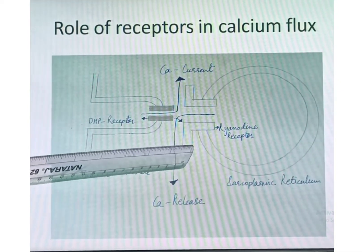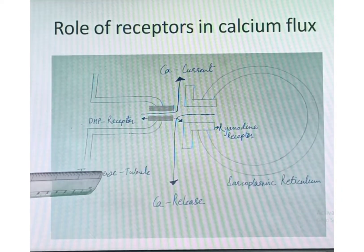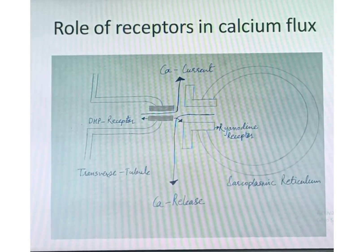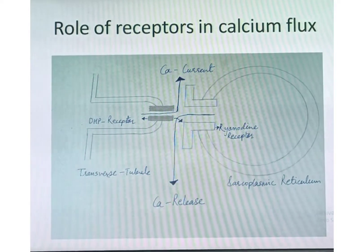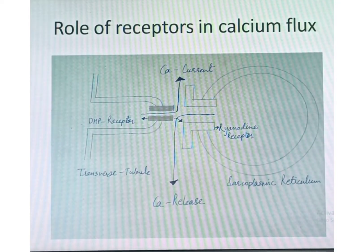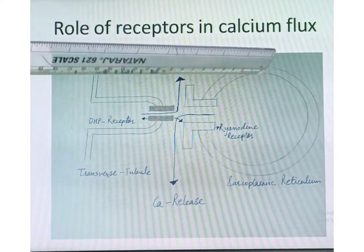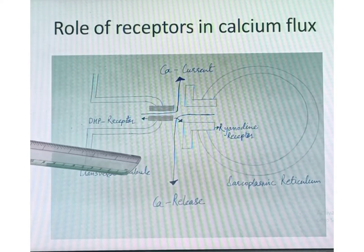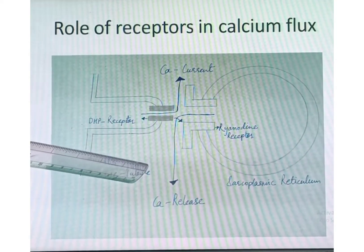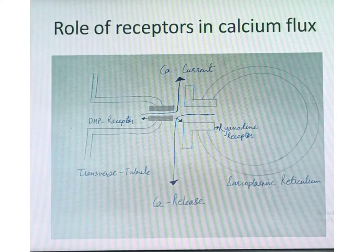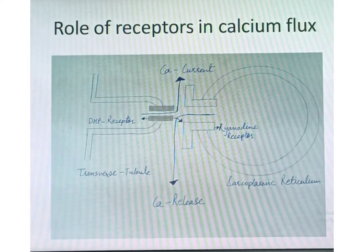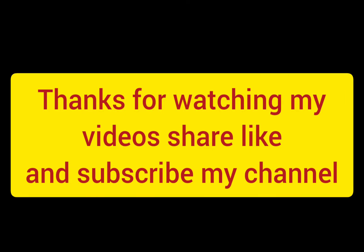Once calcium is released, it binds to troponin C and results in muscle contraction. At the same time, there is auto-activation of calcium ATPase, which pumps calcium from the sarcoplasm back into the sarcoplasmic reticulum. This decrease in sarcoplasmic calcium concentration results in relaxation of the muscle. These are the steps involved in muscle contraction and relaxation. Thanks for watching my videos.